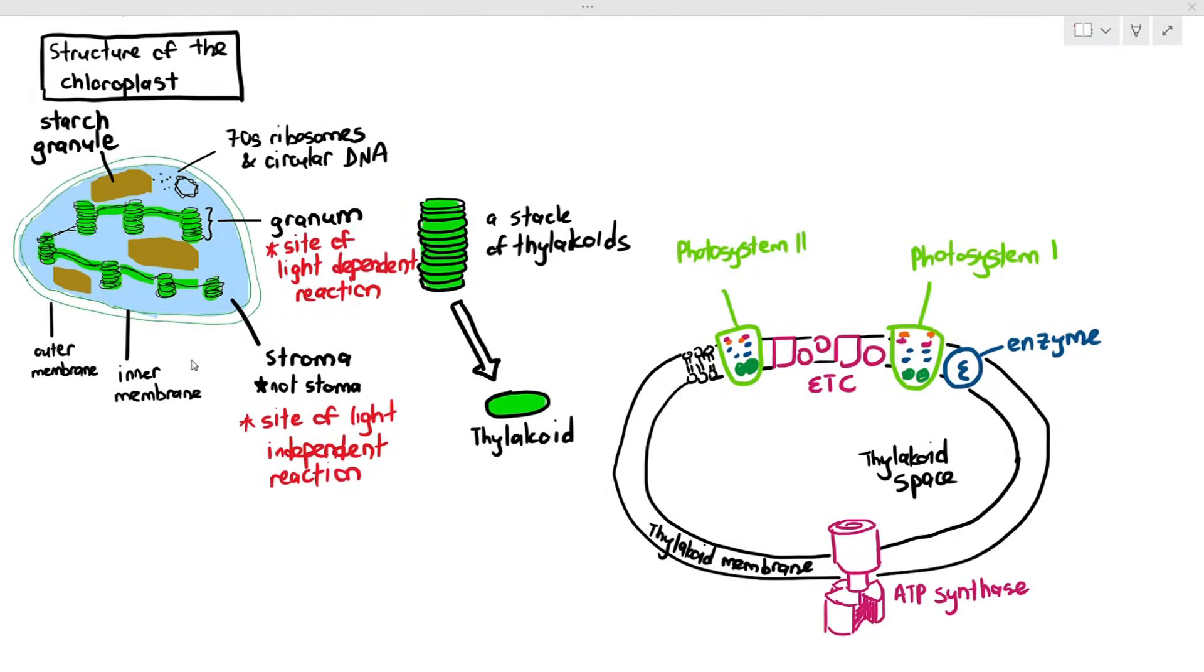In the previous video we were talking about the structure of the thylakoid, and I told you that in the thylakoid itself they have these things called ATP synthase, electron transport chains, photosystem 1 and photosystem 2 together with that enzyme.